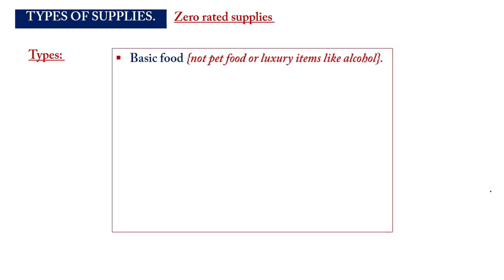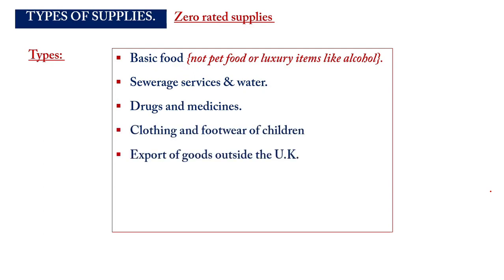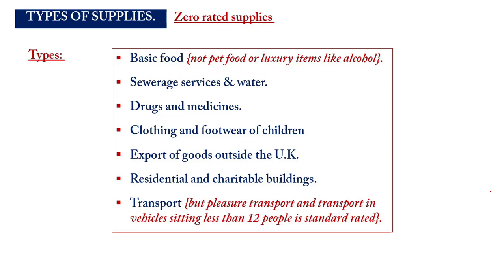Items qualifying as zero rated include basic food (excluding pet food, alcohol, and luxury foods), sewage services and water, drugs and medicines, children's clothing and footwear, export of goods outside the UK, residential and charitable buildings, and transportation. However, transportation does not include pleasure transport or vehicles with a seating capacity of less than 12 — those become standard rated. If seating exceeds 12, transport is zero rated.